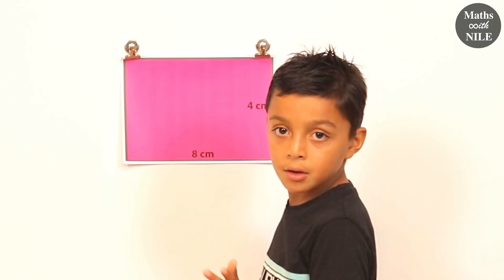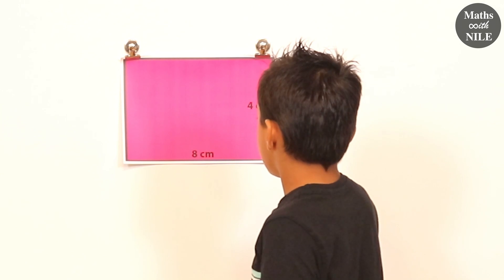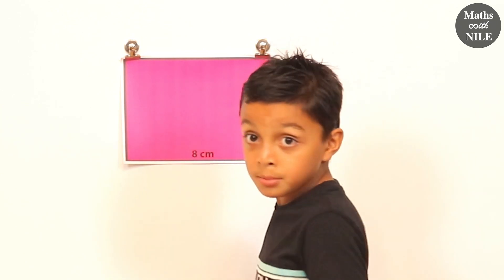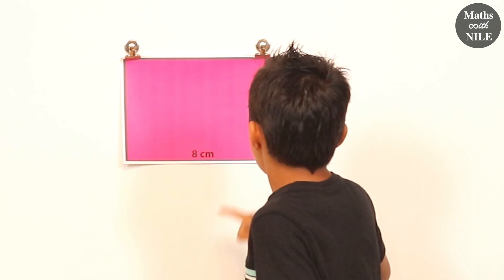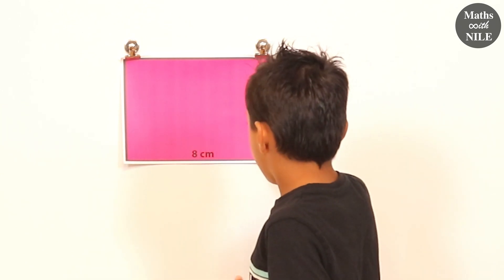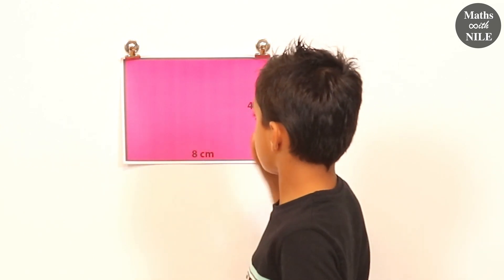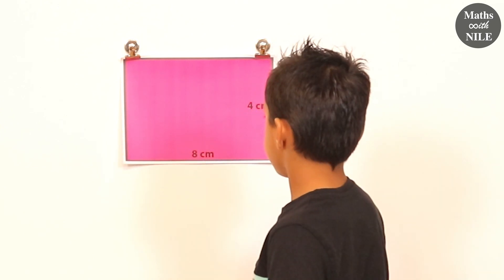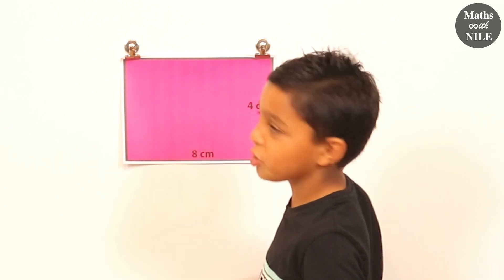So how long is the length? Eight centimetres, both of them. And the width? Four centimetres. Yes. You said both of them because you know a rectangle has two pairs of equal size.